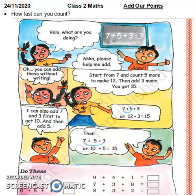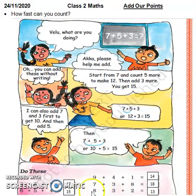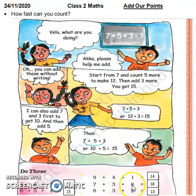यह वाले questions आपको complete करने हैं। आप लोगों की help से अब यह questions पूरे कर लिए हैं: 5+5=10, 10+7=17; 6+5=11, 11+4=15; 9+1=10, 10+4=14; 7+3=10, 10+8=18; 8+3=11, 11+2=13। तो बेटा, यह count on करके भी आप कर सकते हैं।